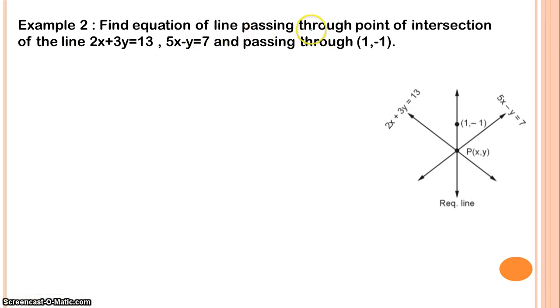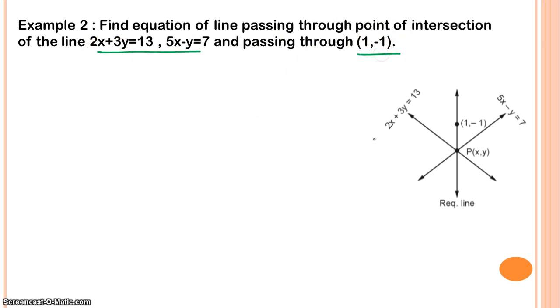Now the next question: find the equation of the line passing through the point of intersection of two given lines and also passing through the point (1, minus 1).